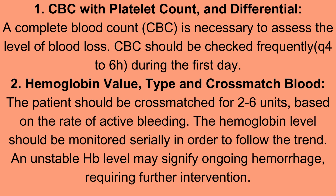Number two: hemoglobin value — type and cross-match blood. The patient should be cross-matched for 2 to 6 units based on the rate of active bleeding. The hemoglobin level should be monitored serially to follow the trend. An unstable hemoglobin level may signify ongoing hemorrhage requiring further intervention.